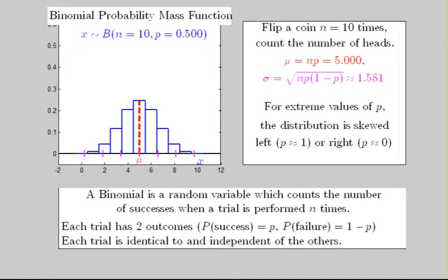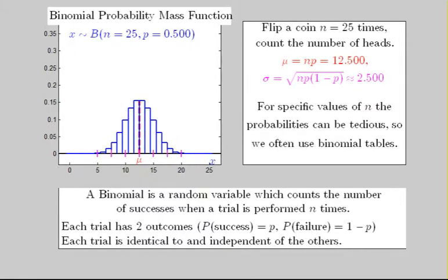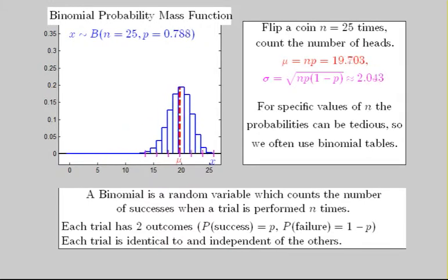For n equal to 25 tosses, we notice that there seems to be many rectangles. The height of each one is computed using the binomial probability mass function shown earlier. In other words, this is a very tedious process.